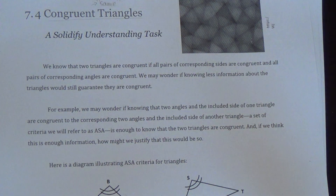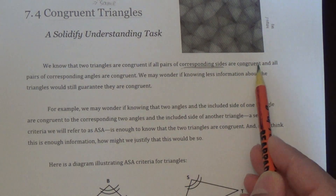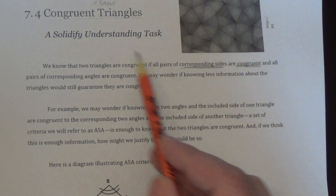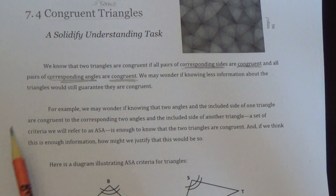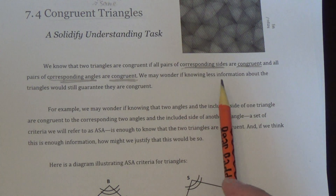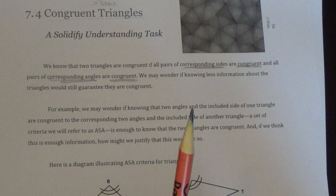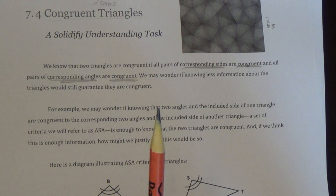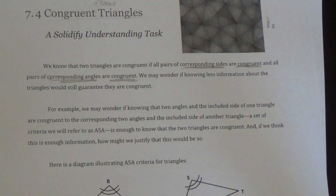That's kind of what the top of the page is saying: all the corresponding sides are congruent, meaning they have the same length, and all the corresponding angles are congruent, meaning they all have the same degree measure. We may want to wonder if knowing less information about triangles can guarantee that they're congruent, so that we don't need patty paper all the time and don't have to verify that all three angles and all three sides are actually the same. Are there other ways we can do that with a little bit less information?